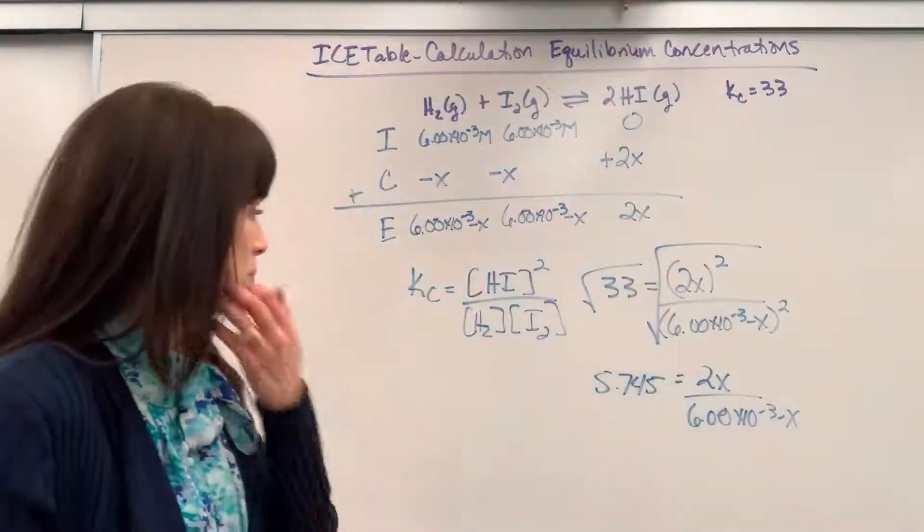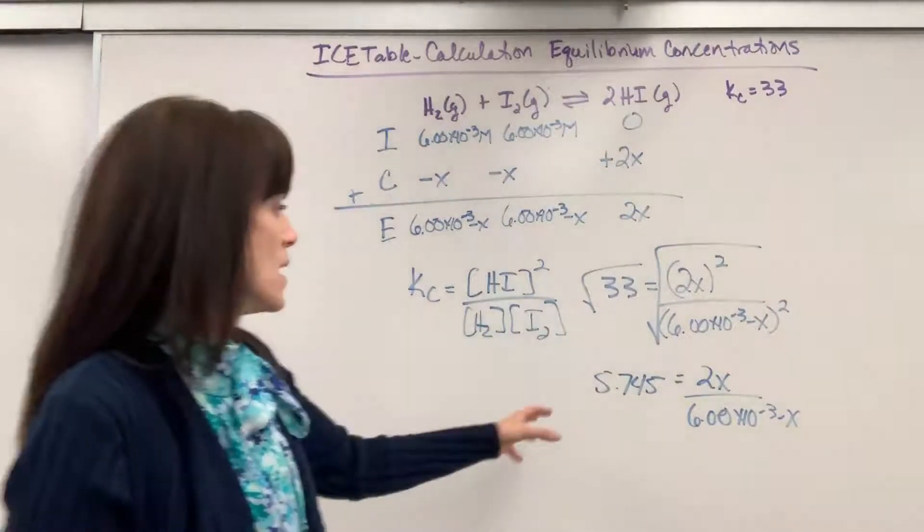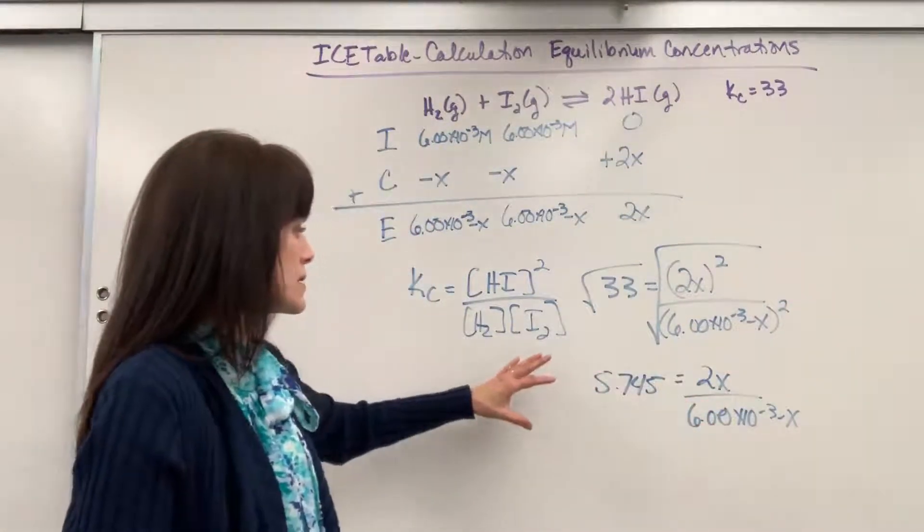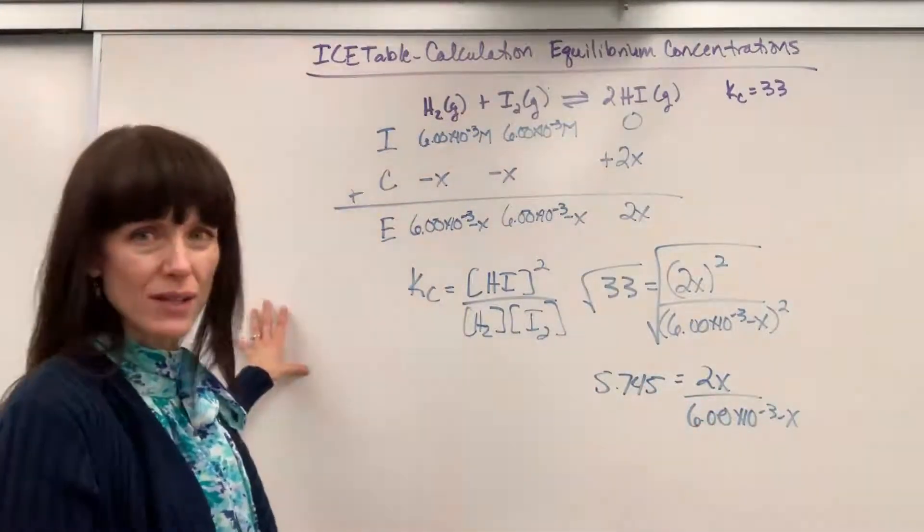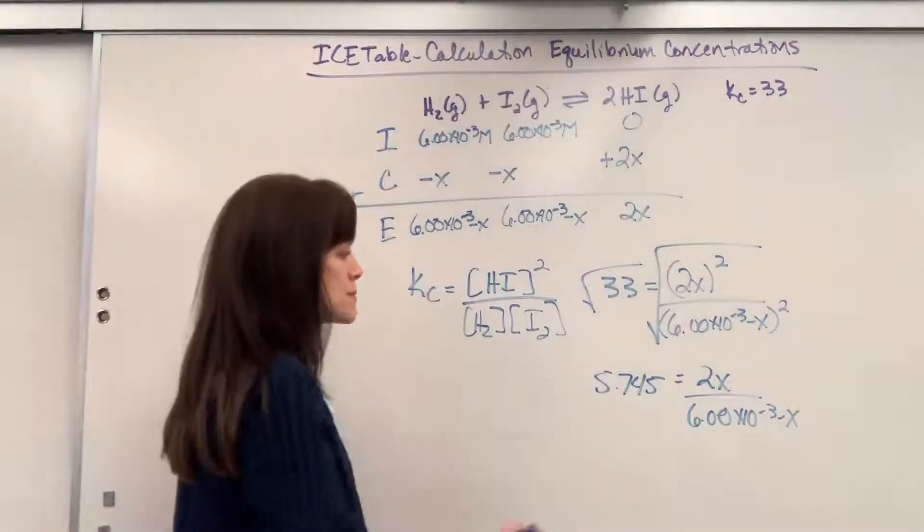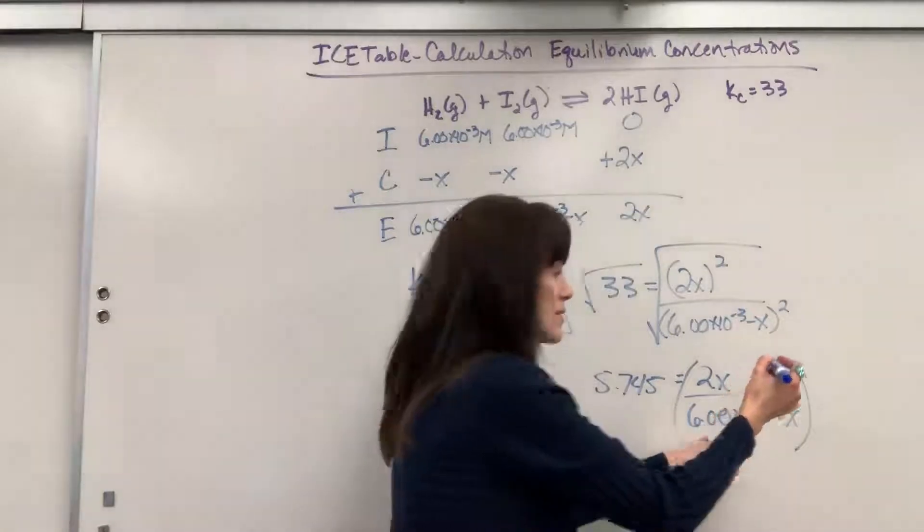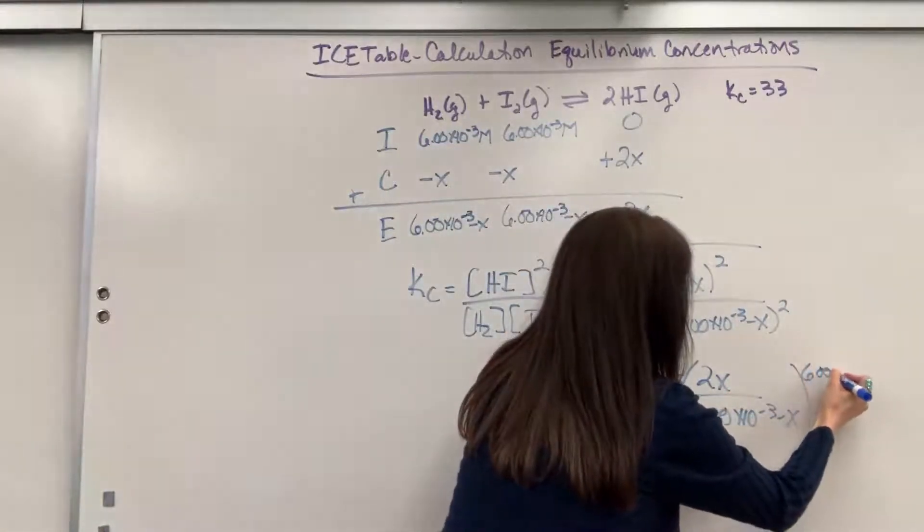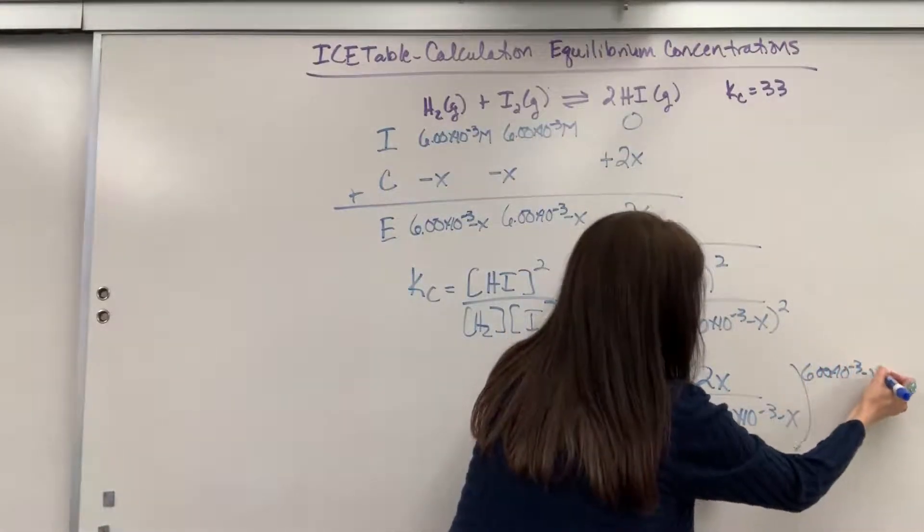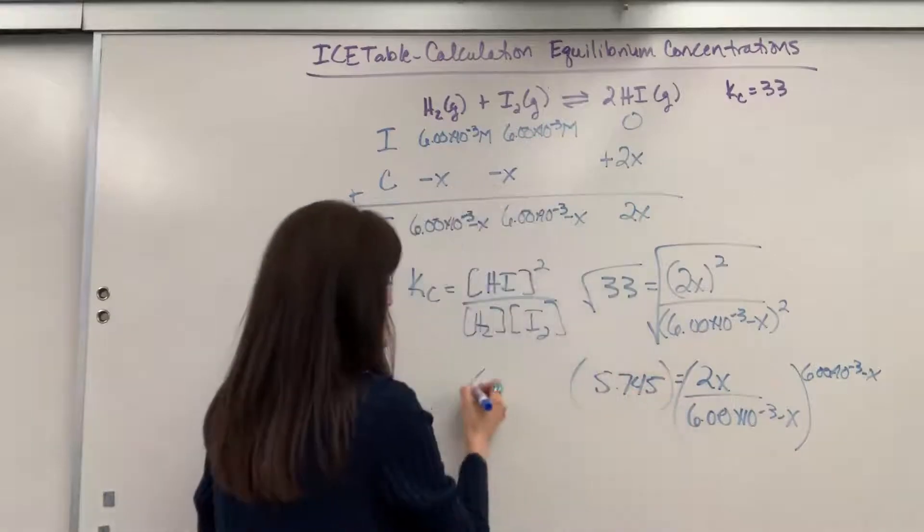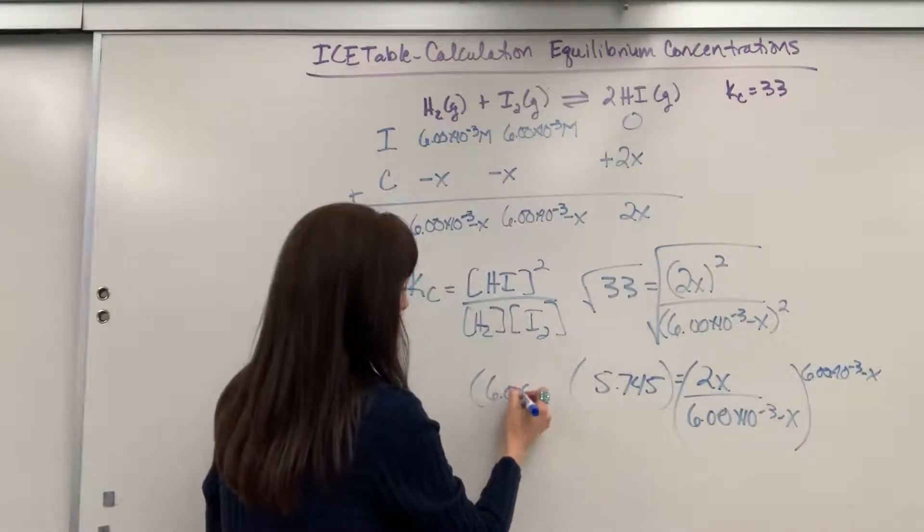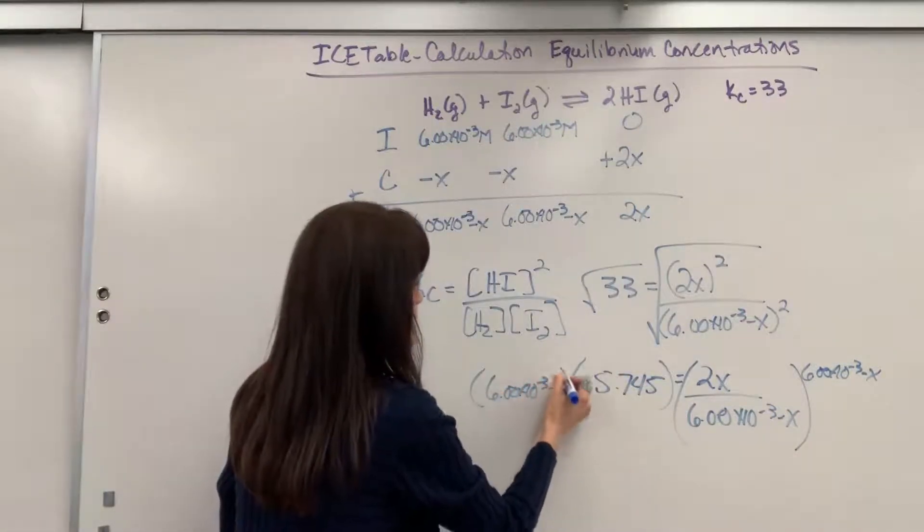now we have a little bit of an algebra problem, so let's go ahead and solve this. I'm going to do some work. I might bring it over here so you can see it better. Let's multiply both sides by our denominator, this binomial, 6 times 10 to the minus 3 minus X. Do that on both sides.